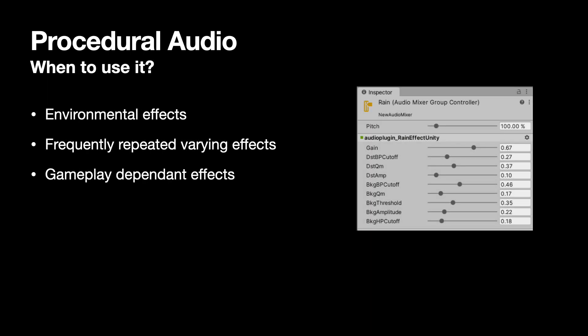So when to use it? Procedural audio is particularly effective for background environment sounds such as wind and rain, where samples could become repetitive. I'll include examples of how this can be implemented. Repeating effects where variation is needed, such as punches, are also very effective, as only slight adjustments are needed for different characters and situations. For example, the speed of a strike from the gameplay parameters, and a hit versus a miss using the same model.